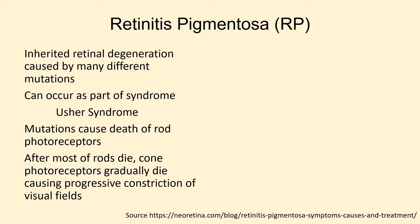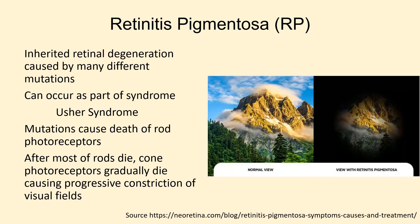However, once most of the rods die from the mutation — which often occurs in the teens, twenties, or thirties, depending upon the mutation — cones begin to gradually die, resulting in slowly progressive constriction of the peripheral vision occurring over decades until there is tunnel vision, as shown on the right.